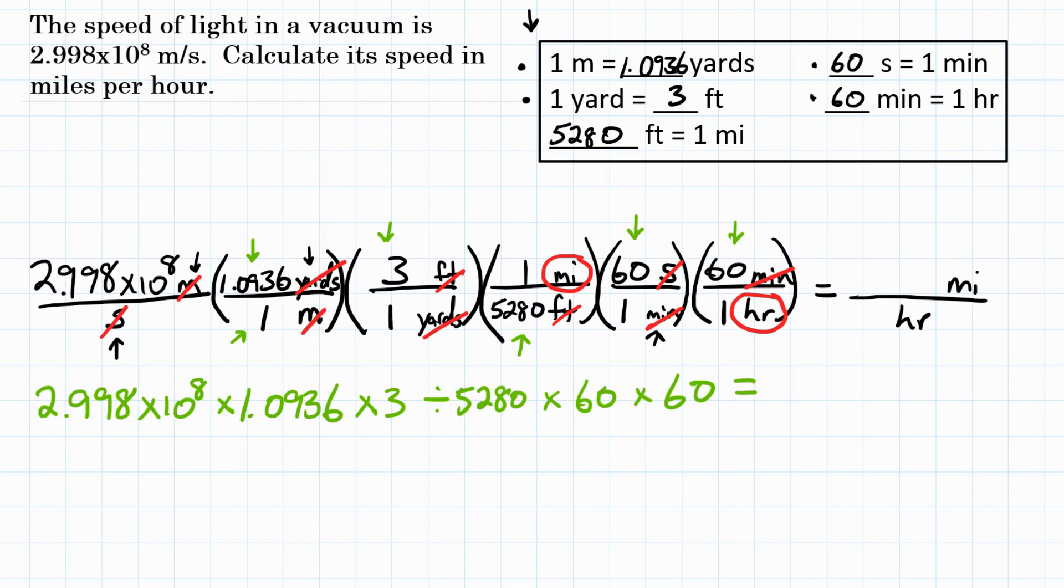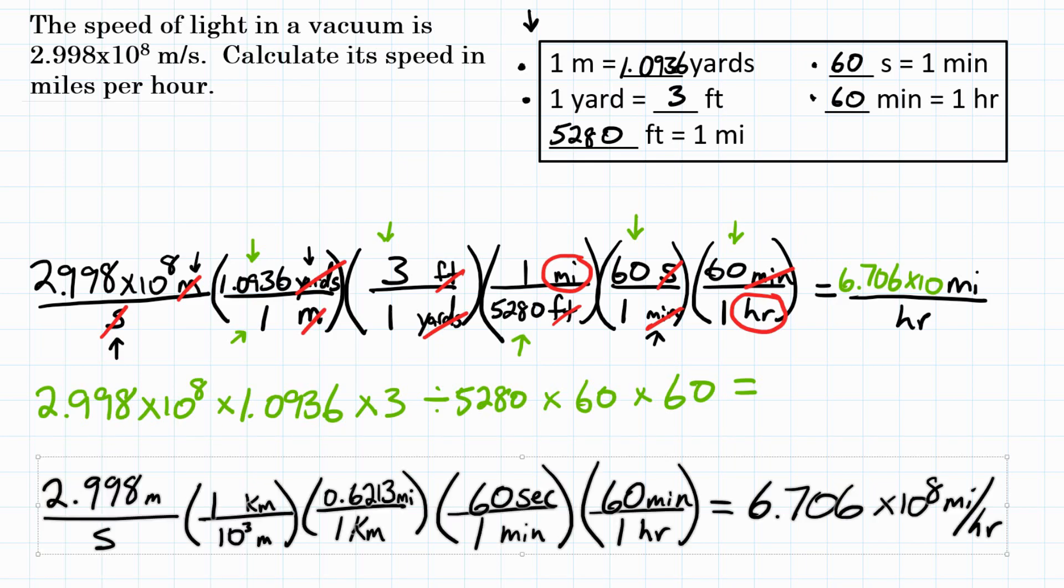So plugging all that in and hitting equal should give us right around 6.706 times 10 to the eighth. And that is miles per hour. Now there could be other ways to solve this conversion depending on the different relationships you have. Another example would be right here where we actually use the relationship between kilometers and meters to get rid of meters and then use the relationship between miles and kilometers to get rid of kilometers. So this process was actually one conversion step shorter and we still got to the same answer.